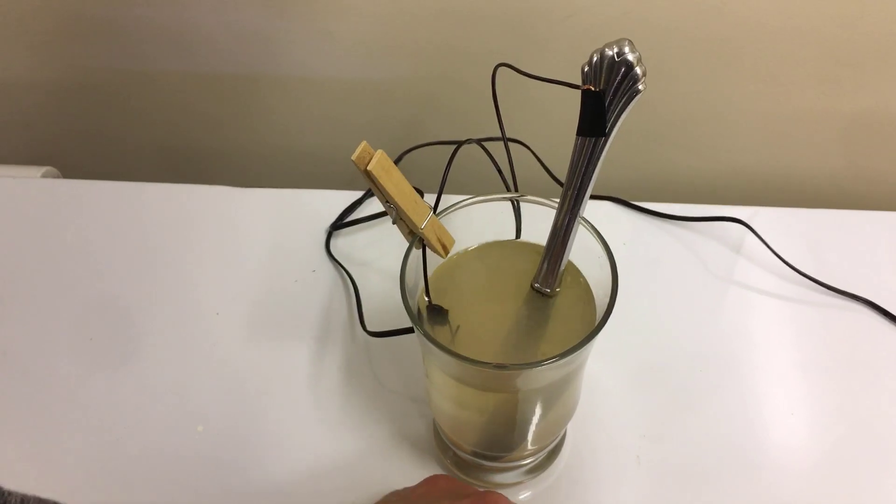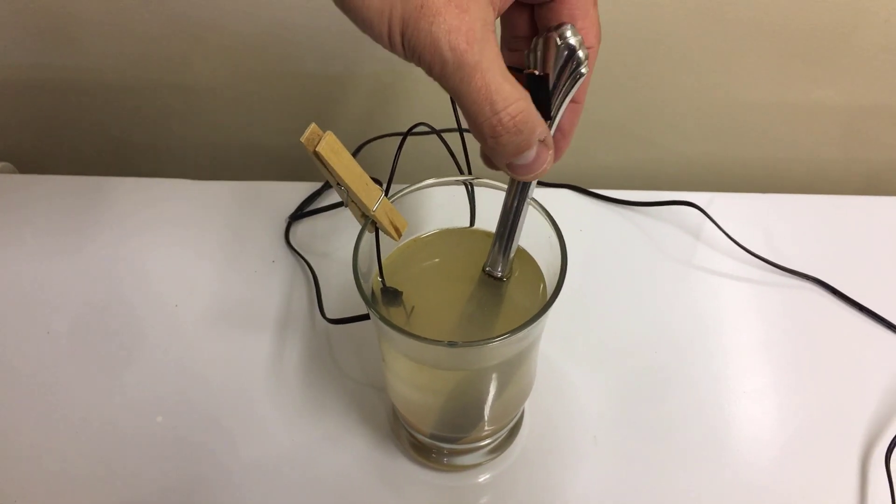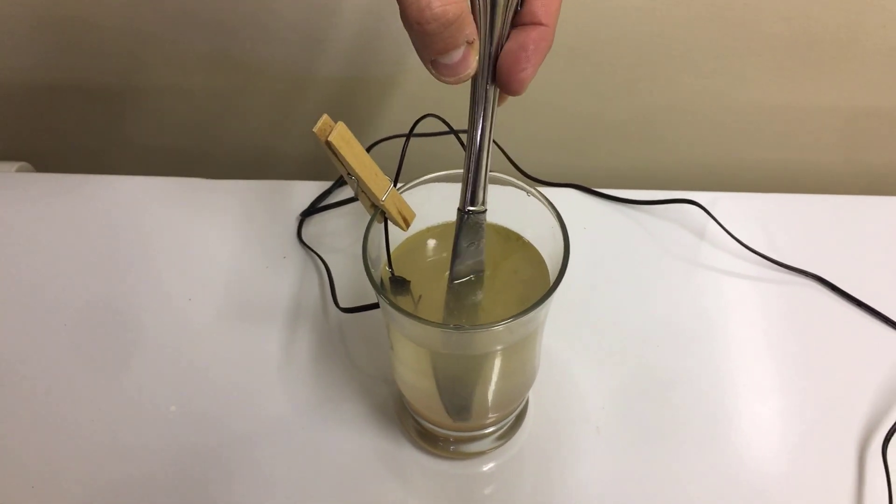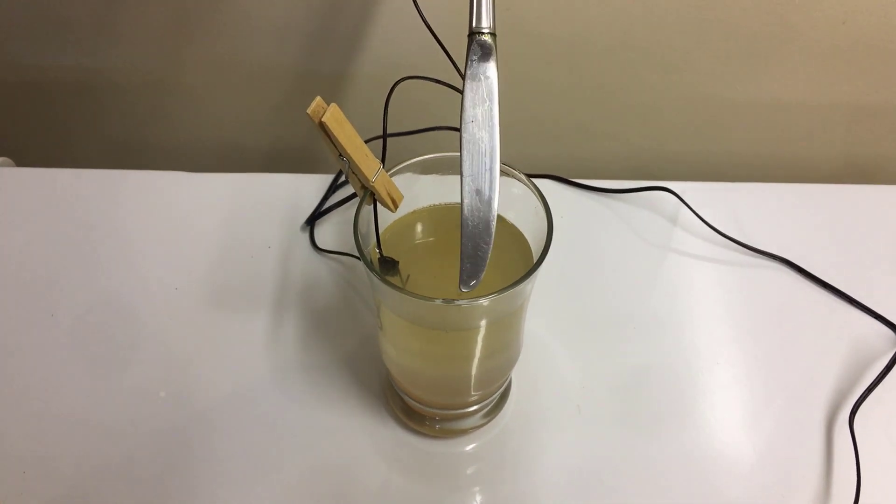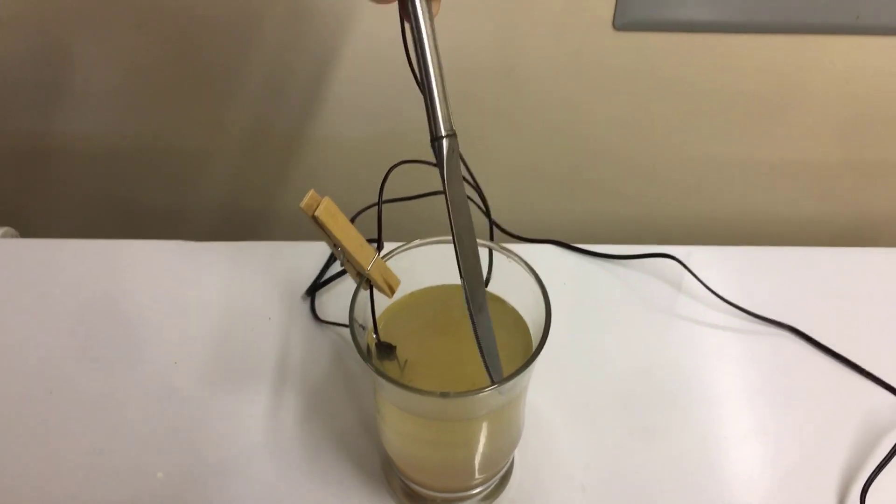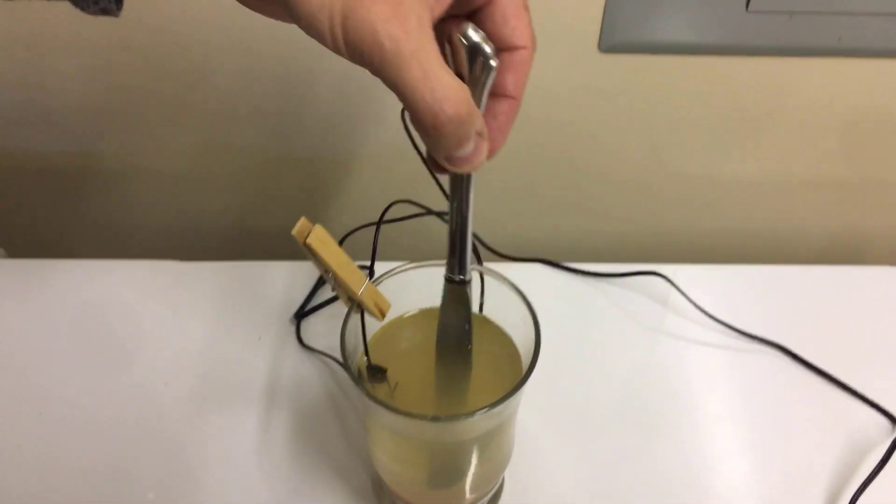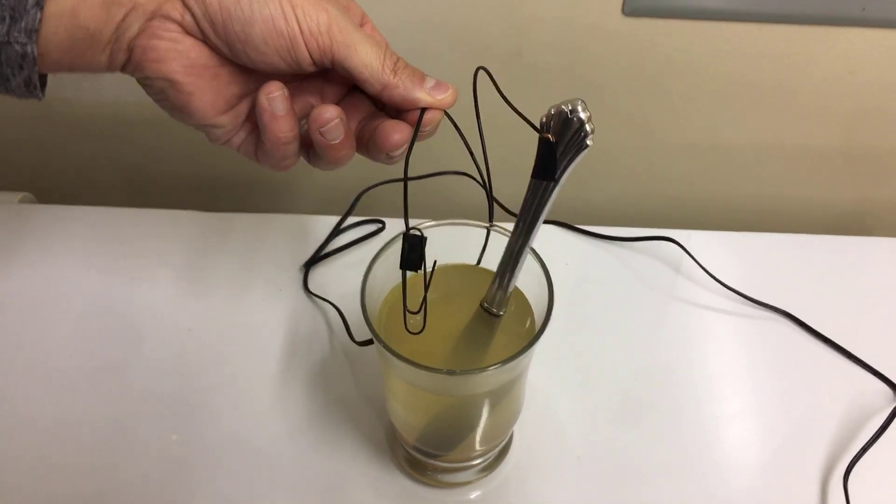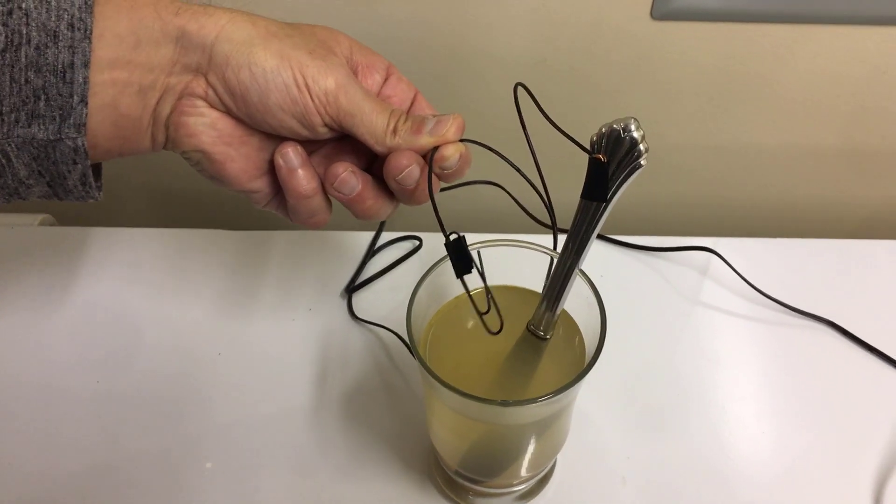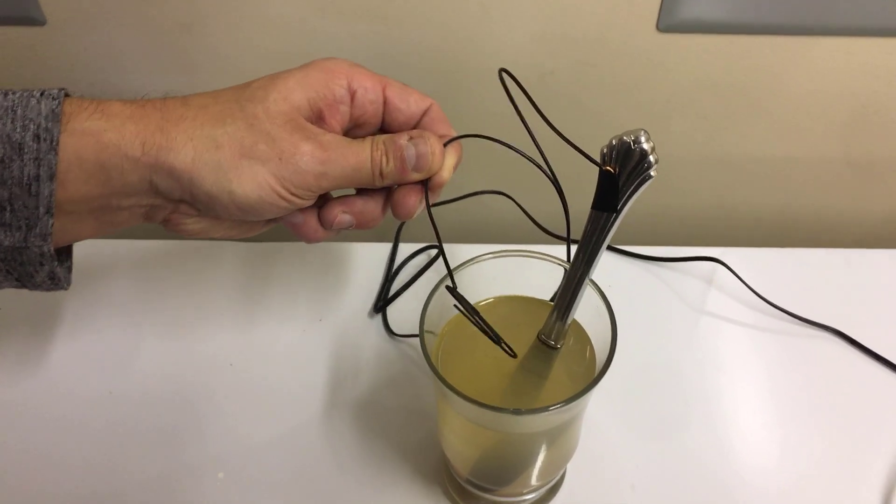So now we've unplugged it and let's see what we got here. Got some black stuff at the top. Hasn't changed a whole lot other than the top. Let's take a look at the other part here. Let's take a look at the paper clip. The paper clip has completely turned black. Look at that.